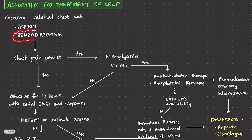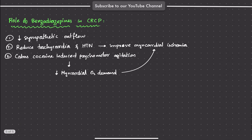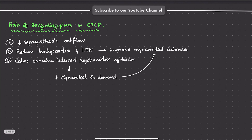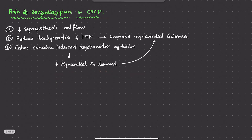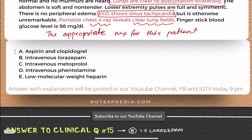The role of benzodiazepines in cocaine-related chest pain is that they decrease sympathetic outflow, reduce tachycardia and hypertension, improve myocardial ischemia, and calm cocaine-induced psychomotor agitation — all of which decreases myocardial oxygen demand.